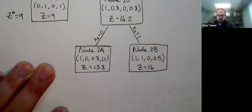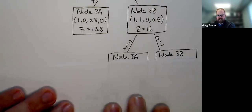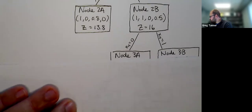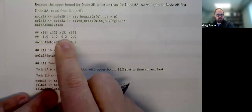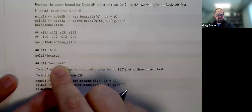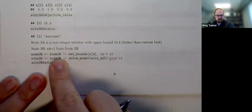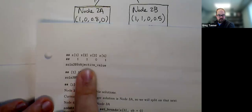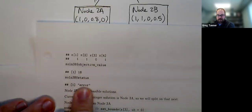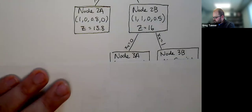So we're going to branch on node 2b. Non-integer variable is x4. And so we set x4 to 0 and x4 to 1 to get node 3a and 3b. So let me keep my sheets of paper straight here. Okay. So here's node 3a. It gets solution of 1, 1, 0.2, 0 with an objective value of 15.2 and status equals success. And node 3b, you can see here's the problem from it. But then when we look at the solution and the status, it's error. And so node 3b has no feasible solutions.